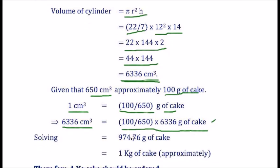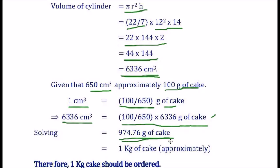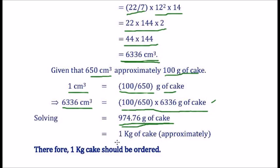So by solving, we get 974.76 gram of cake. That is, approximately, it is 1 kg of cake. Therefore, 1 kg of cake should be ordered.